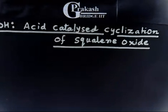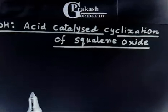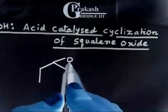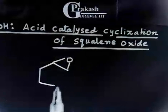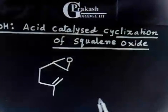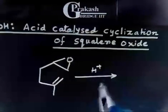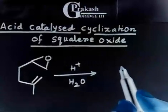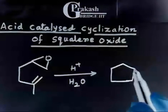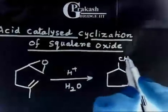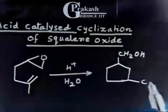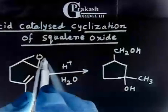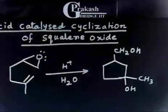This is the easy problem, so let us discuss. This problem is related to writing a mechanism. I have a compound — this is basically an epoxide and there is also a double bond. If I treat this compound with H⁺ in the presence of H₂O, it forms a 5-membered ring. The product has a 5-membered ring, with CH₂OH at one position, and CH₃ and OH at another position. Let us write the mechanism for this reaction.